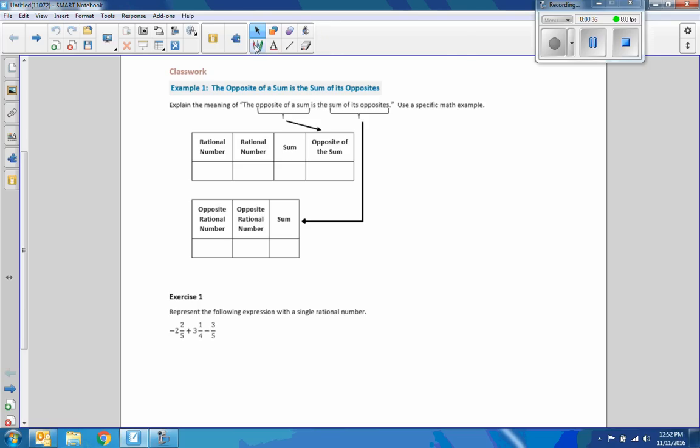Let's pick a rational number, 7, and another rational number, negative 2, and add them. 7 plus negative 2 is 5. The opposite of the sum is the opposite of 5. The opposite of a sum is the sum of its opposites. What's opposite 7? Negative 7. What's opposite negative 2? Positive 2. The sum of negative 7 plus 2 is negative 5. So the opposite of a sum is the sum of its opposites.